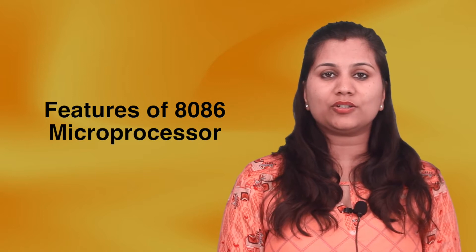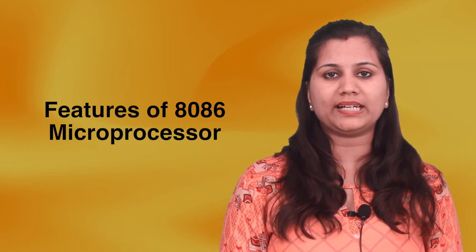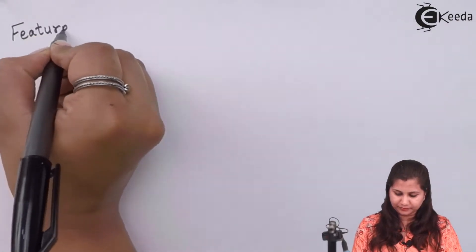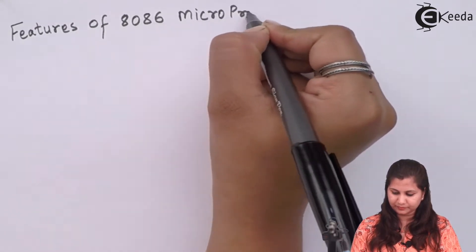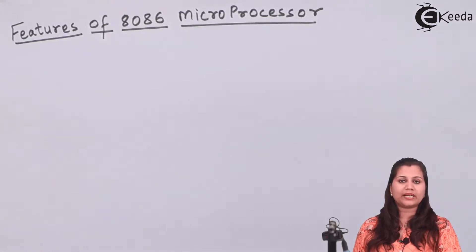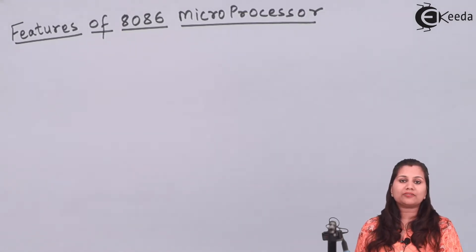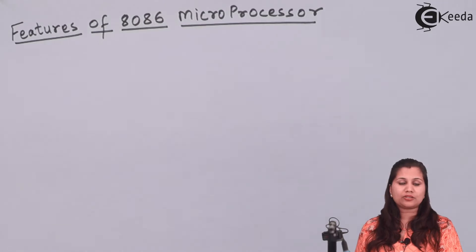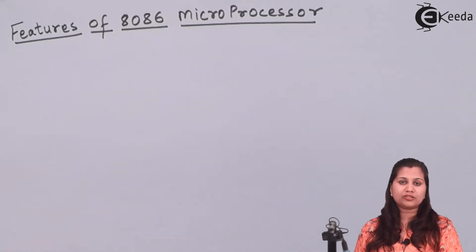In this video we will study some of the features of the 8086 microprocessor. The 8086 microprocessor is an enhanced version of the 8085 microprocessor. The 8085 had some limitations: multiplication and division operations could not be performed, it executed only one instruction at a time, its speed was slow, and its size was more. All these limitations were covered in the 8086 microprocessor.